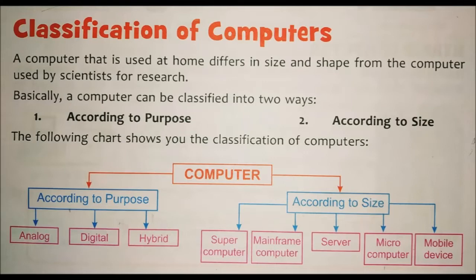Computer is divided into two parts. First is according to purpose and second is according to size. According to purpose is divided into three parts: analog, digital, and hybrid. According to size it is divided into five parts: super computer, mainframe computer, server, micro computer, mobile device.